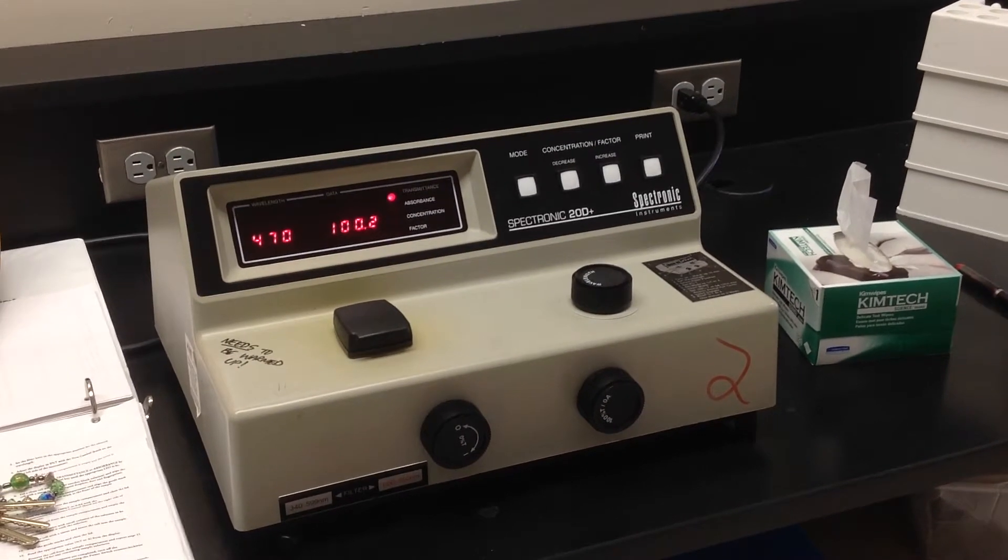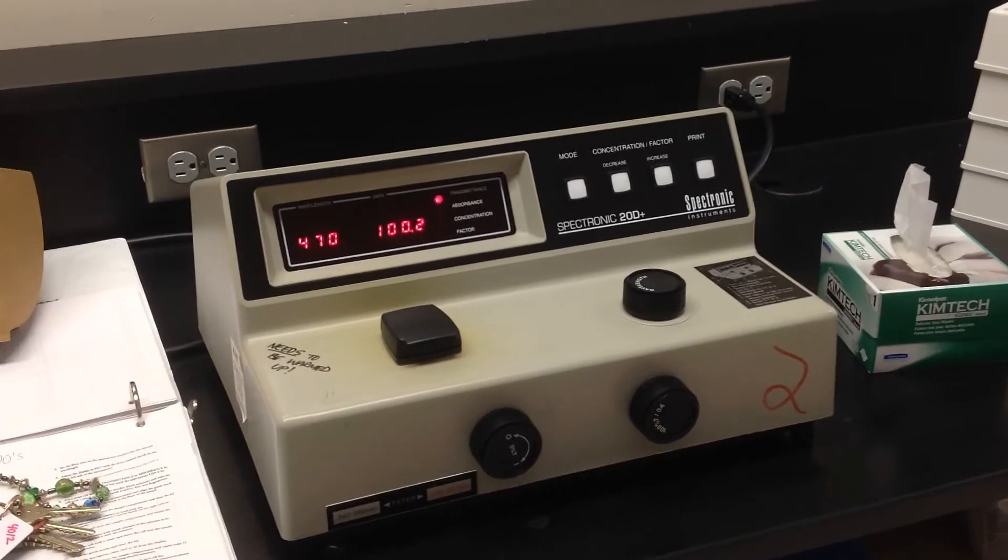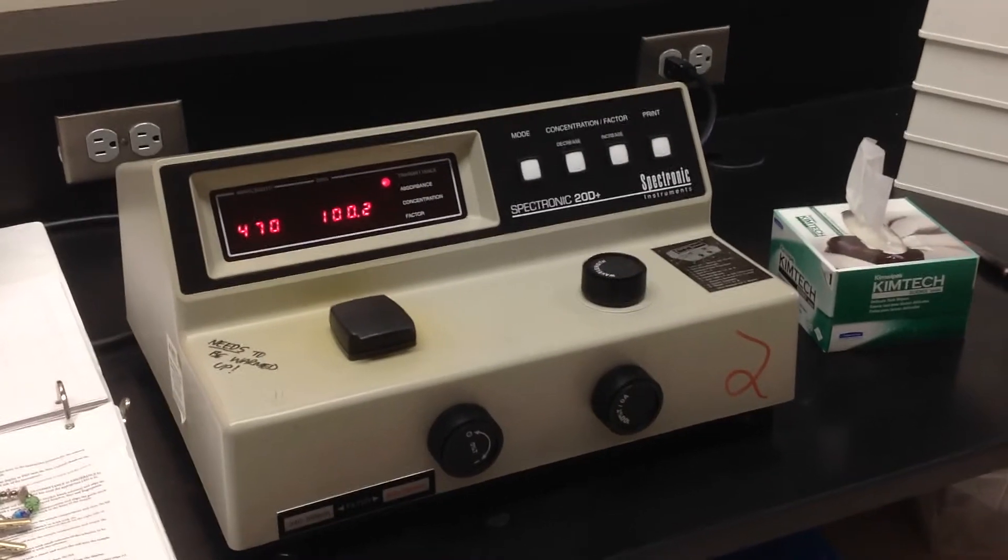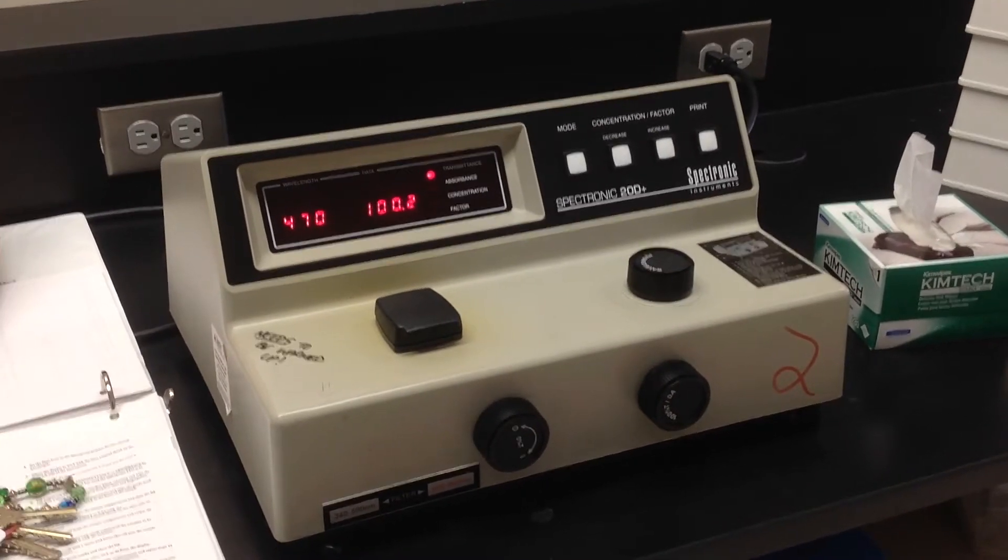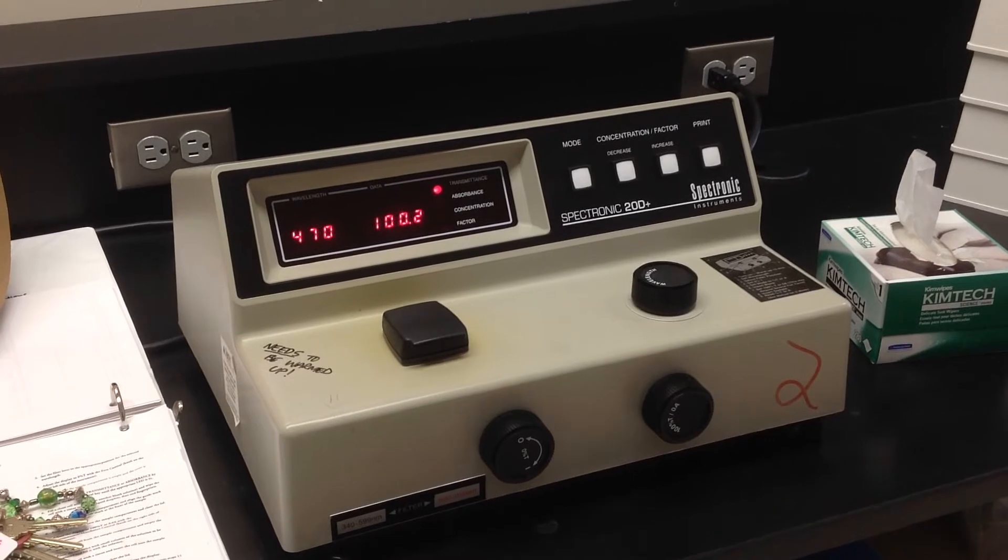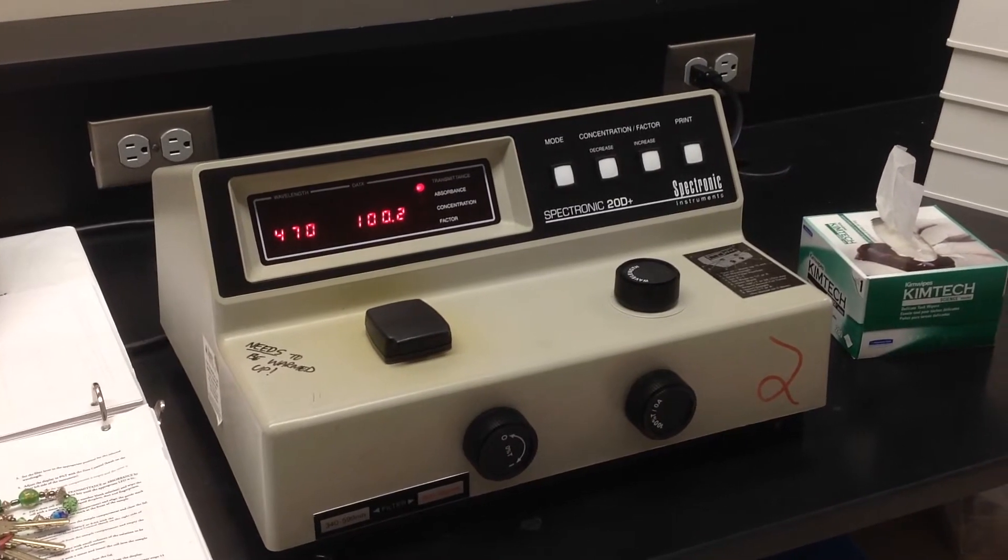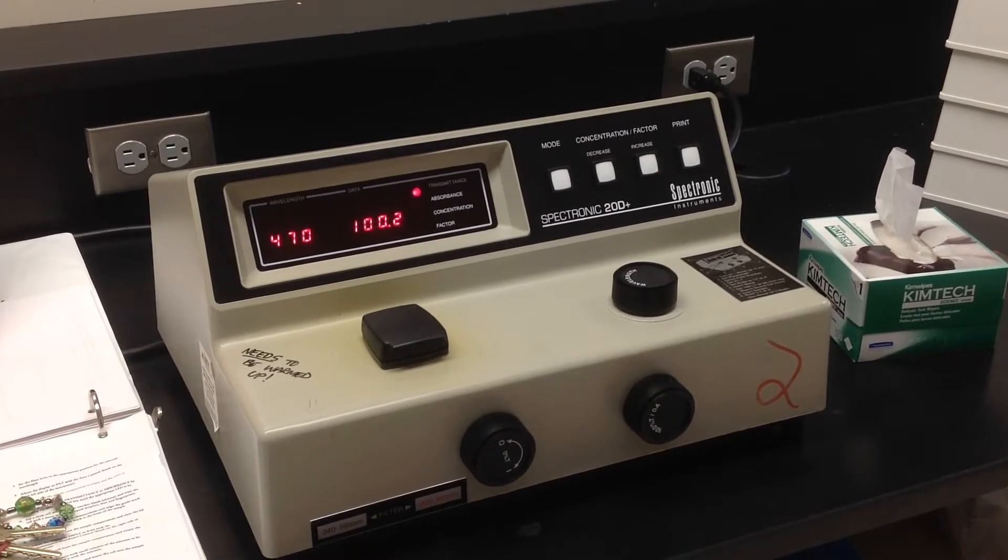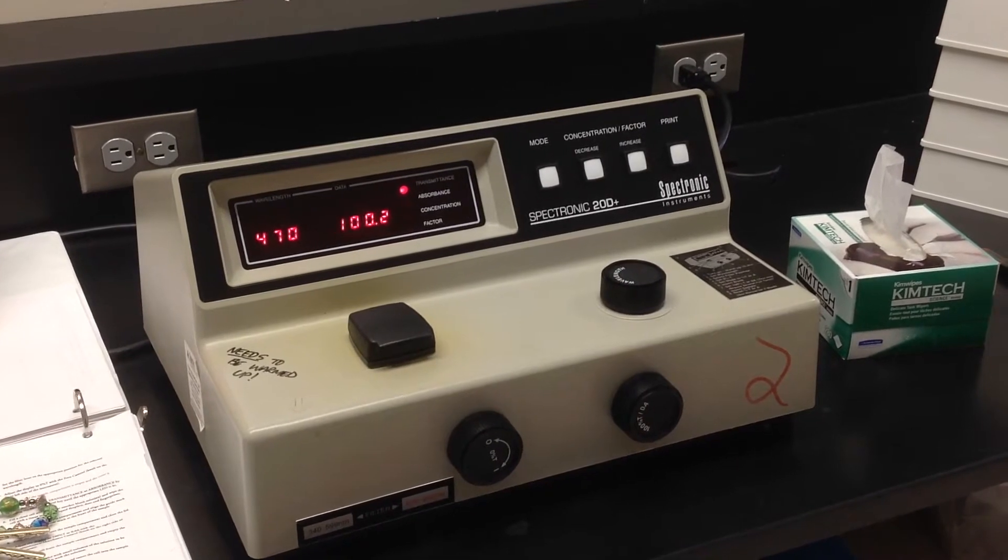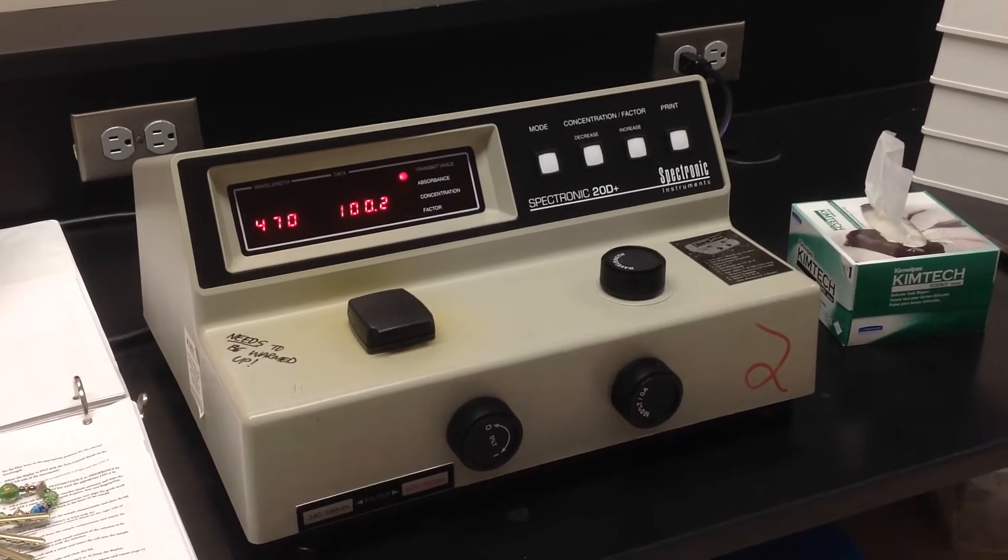All right guys, this is one of those weird videos where I'm not in it, and instead I'm going to show you some equipment. This is a spectrophotometer, and the job of a spectrophotometer is to quantify color, and that takes some of the ambiguity out of what color something is and gives us numbers to work with, which generally makes scientists happy.